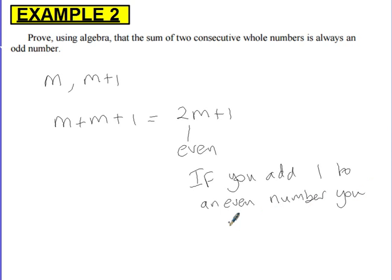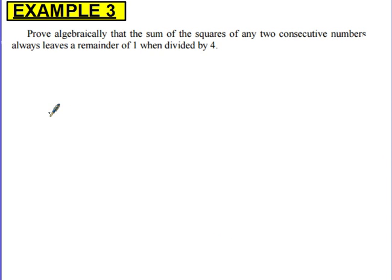So 2m is even, and adding 1 gives an odd number — that's the proof for that one. Example 3: Prove algebraically that the sum of squares of any two consecutive numbers always leaves a remainder of 1 when divided by 4.